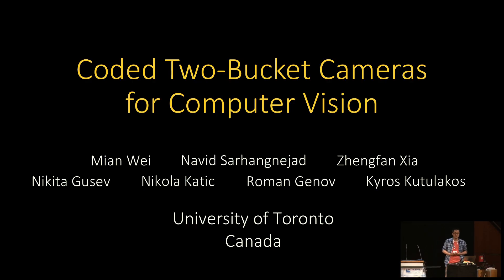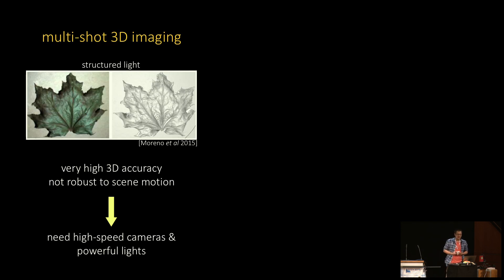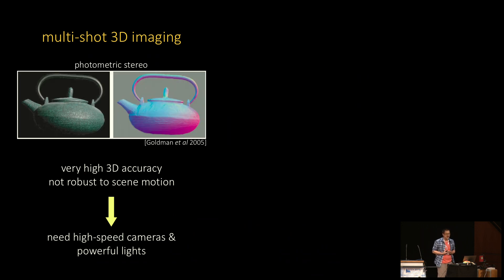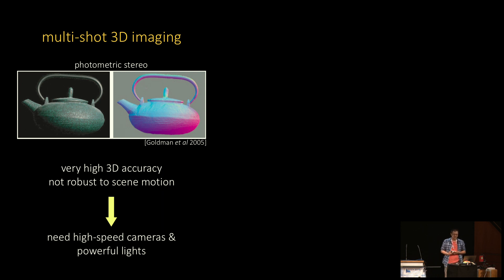Our camera is designed to overcome two basic trade-offs in imaging. The first is about 3D imaging of dynamic scenes with active light sources. We know how to build high-accuracy 3D models of static scenes by capturing images sequentially with different illumination conditions, but these techniques have not been practical for dynamic scenes, because even small motion can break the assumptions used when imaging at standard video rate.